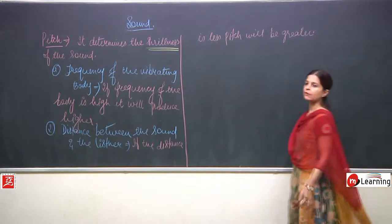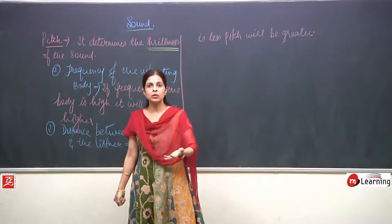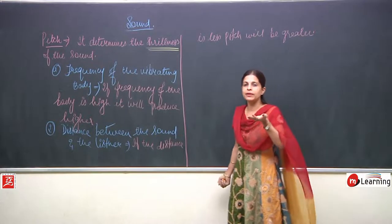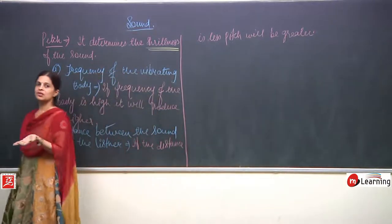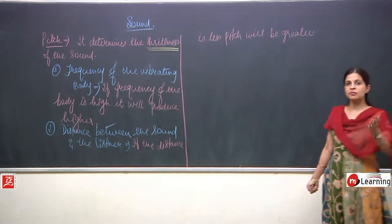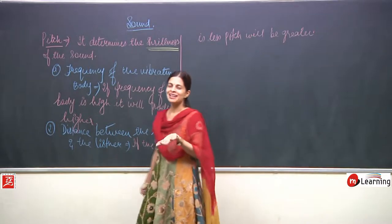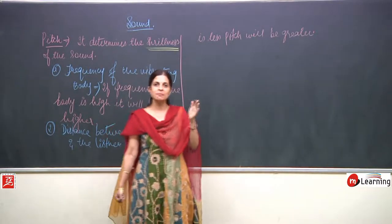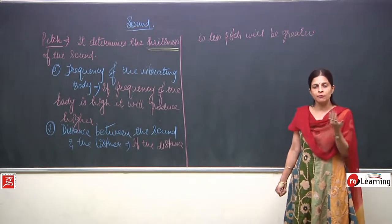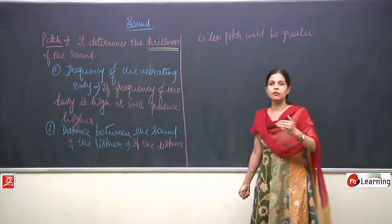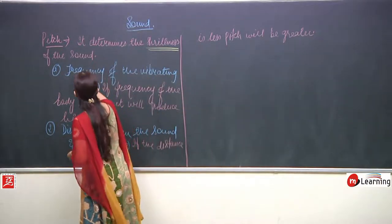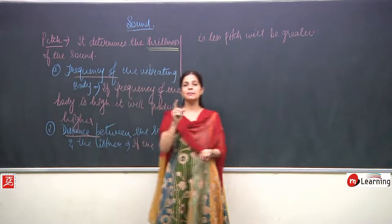When you go very close to loudspeakers, the pitch is high, but as you go farther away the pitch gets reduced. So pitch depends on two things: first, frequency; second, distance. Remember — loudness depends upon amplitude, and pitch depends upon frequency. Pitch and frequency are not the same; pitch cannot be measured, but frequency can be measured. For example, if I rotate my hand two times in one second, that is 2 hertz — it can be measured — but pitch cannot.